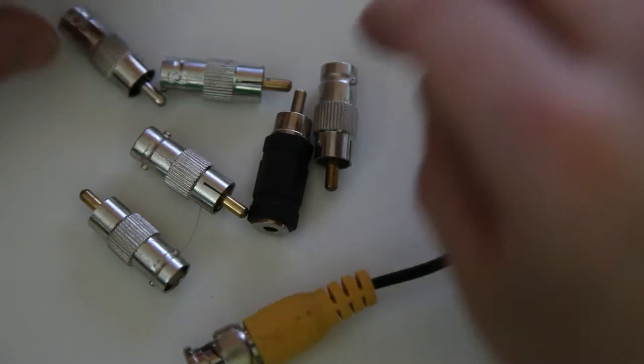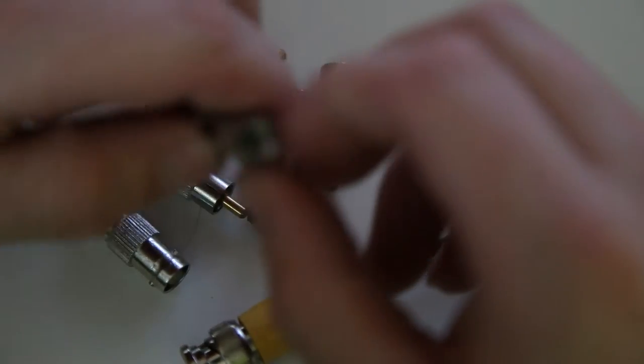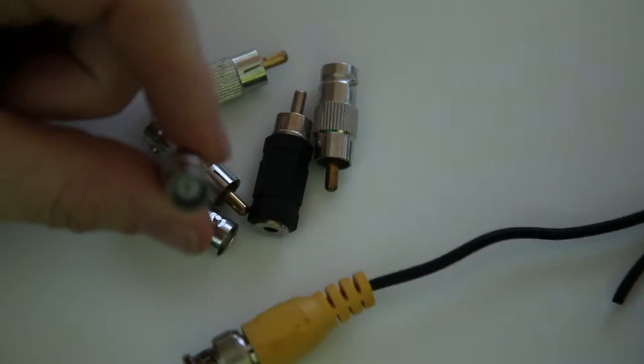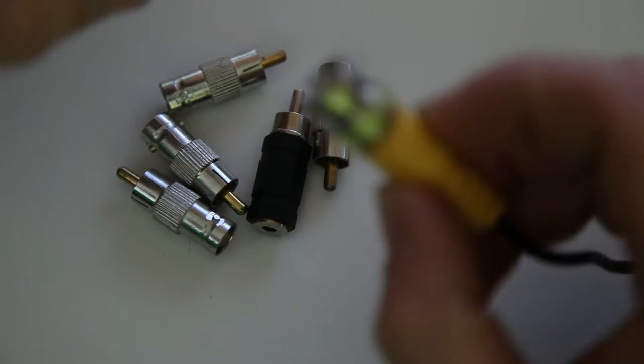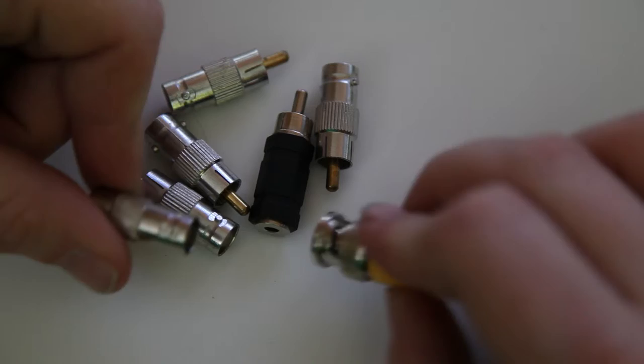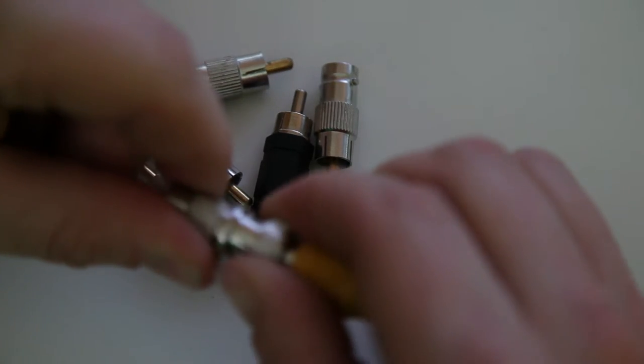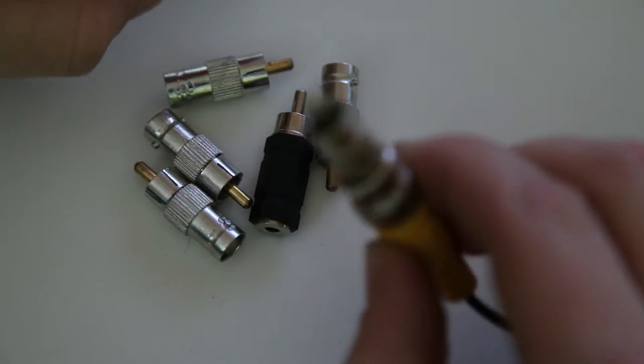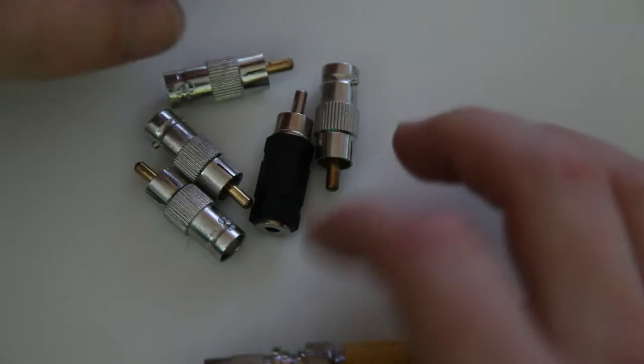So these connectors are called RCA to BNC. It's got a female BNC on the end like that, and then you get your BNC cable which you want to convert and then you have to push it into there and turn, and that's basically it.